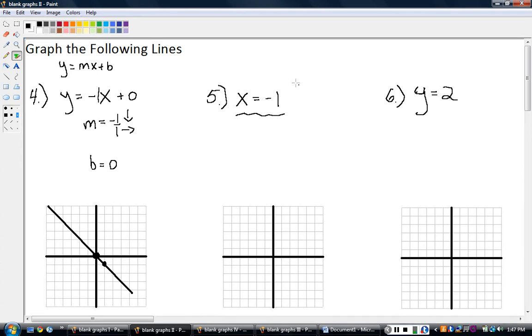X equals negative one. You might remember that has a slope that's undefined, and it's a vertical line. And everywhere on this vertical line, the X value is negative one. So that's all these points back here. X value negative one there, X value negative one there, and so on.